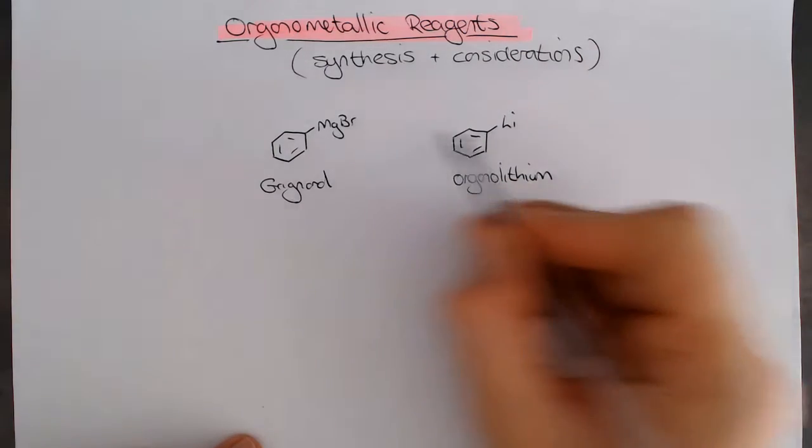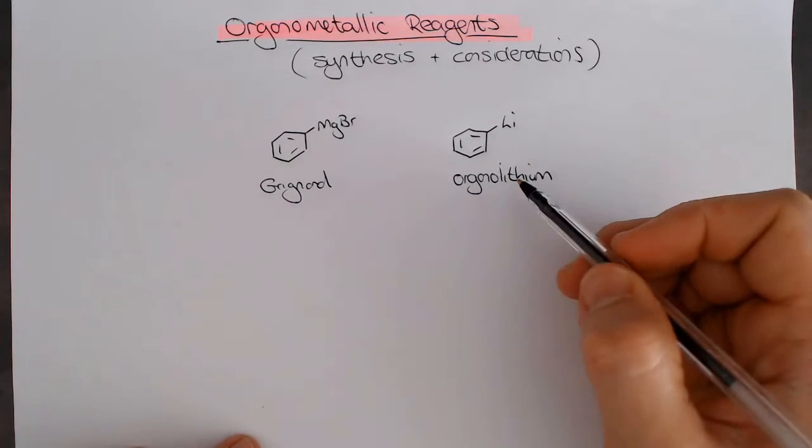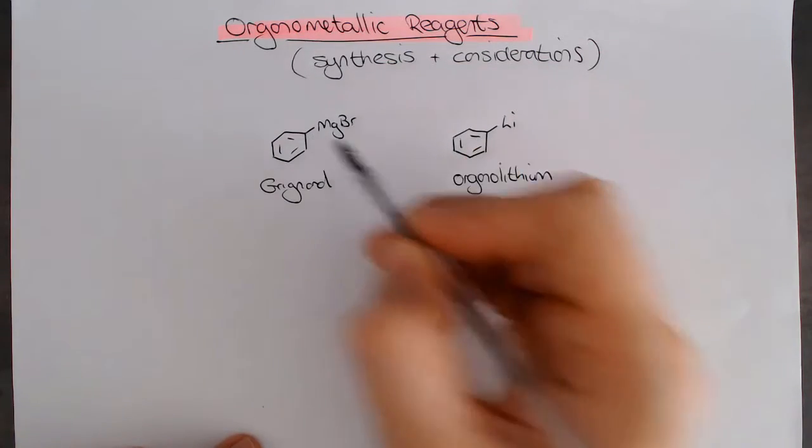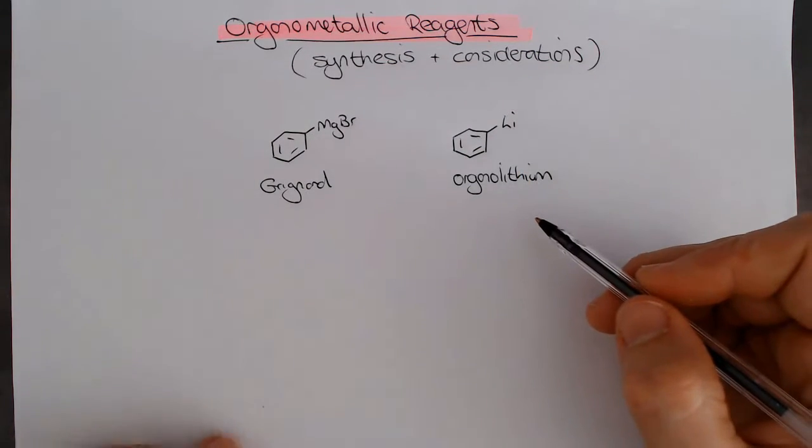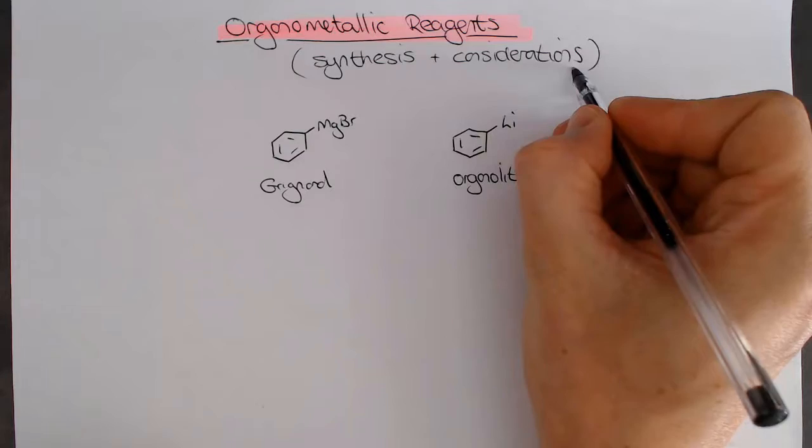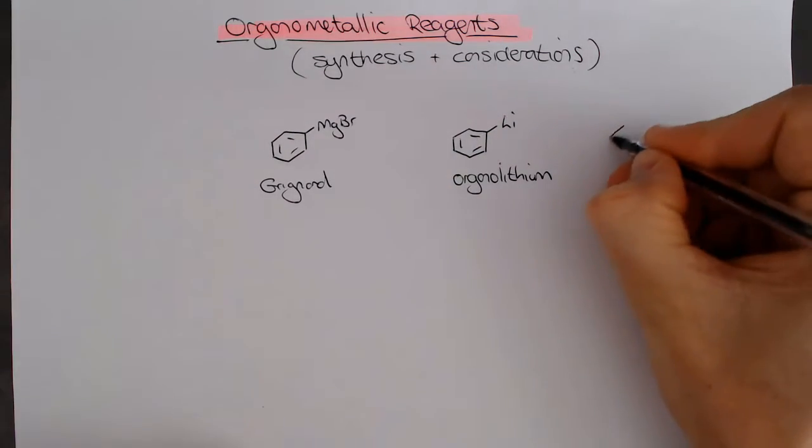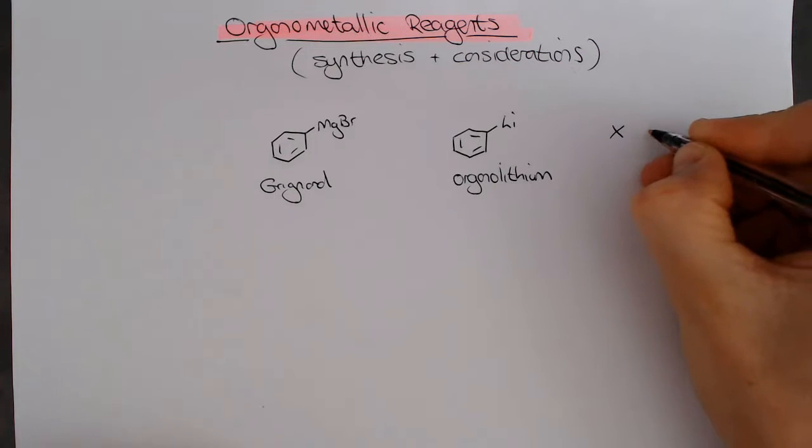Instead of magnesium, we have a lithium ion over there. Both of them are high-energy sigma bonds, which are incredibly nucleophilic and are great at adding to electrophiles. The one consideration that we have to consider with all of these things is that these reagents are not compatible at all with acidic protons.